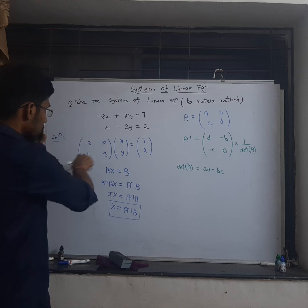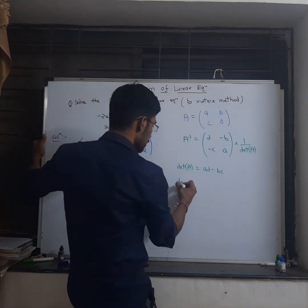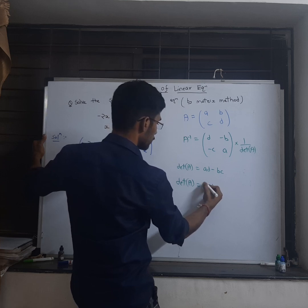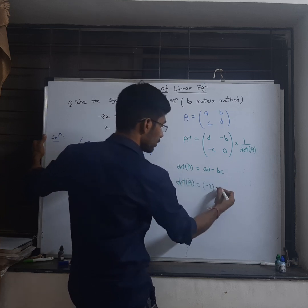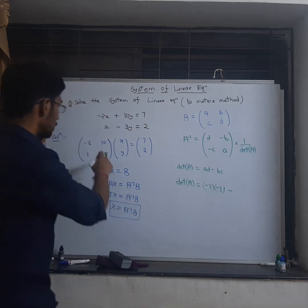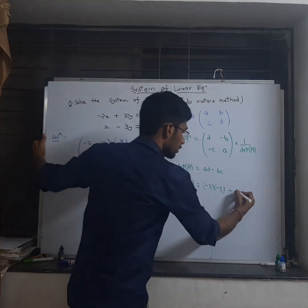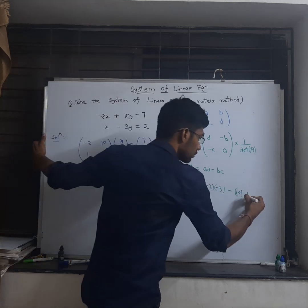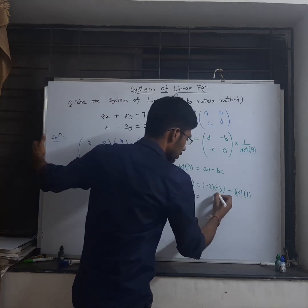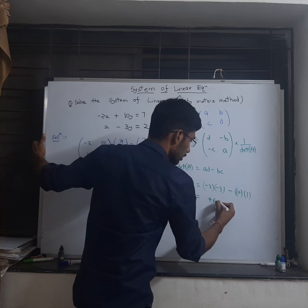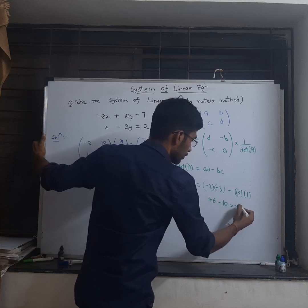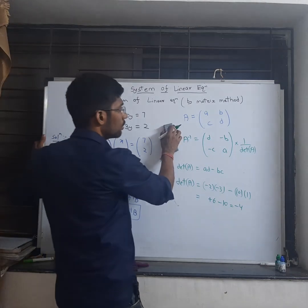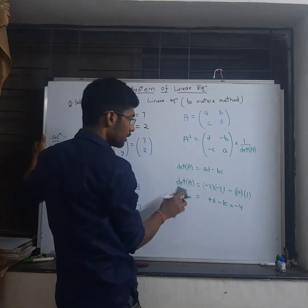So for this matrix, my determinant is minus 2, d is minus 3, minus b which is 10, and c is 1. So this is minus minus plus, so this is plus 6 minus 10, which is minus 4. So my determinant is minus 4.